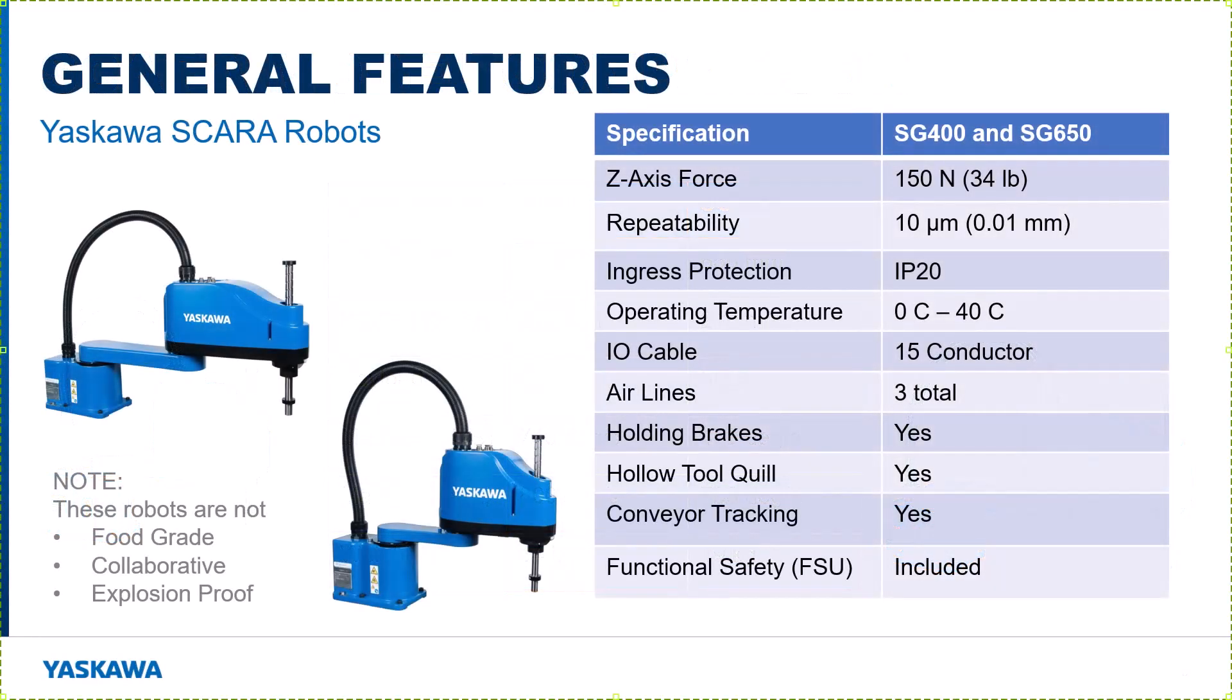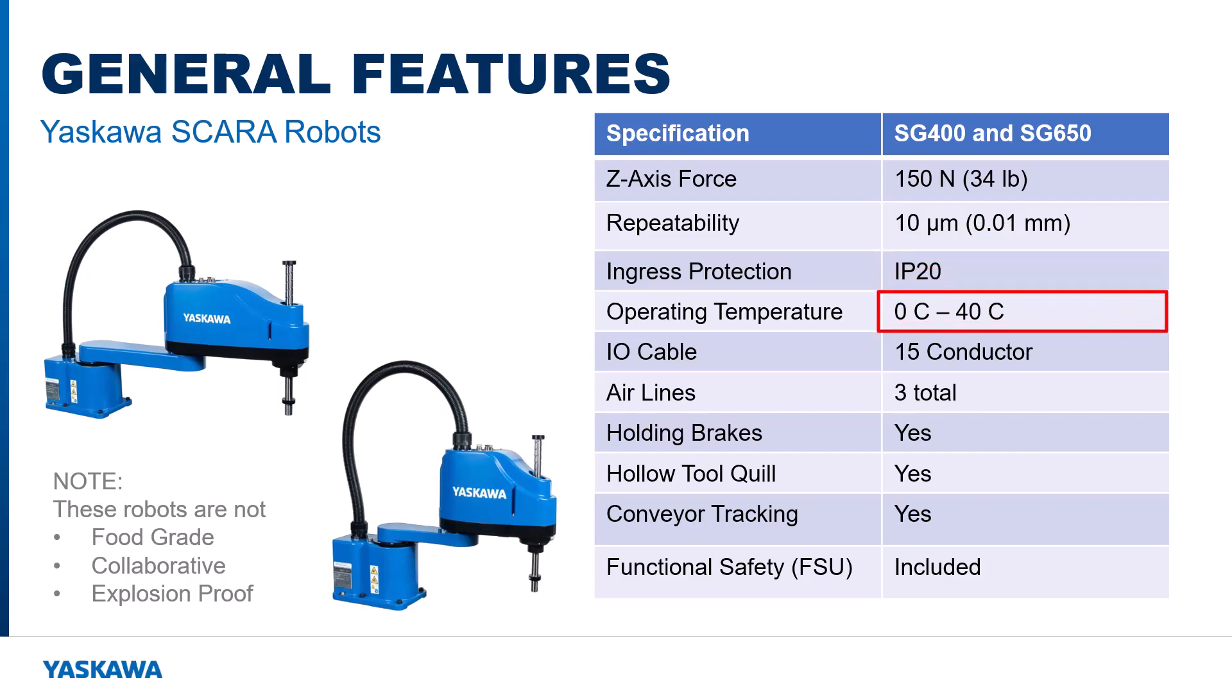These two robots have much in common. The Z-axis can produce a force of up to 150 newtons or about 34 pounds. The repeatability is rated at 10 microns, that's 1 hundredth of a millimeter. The ingress protection is IP20, with an operating temperature from 0 to 40 C. Note that the SG-series robots are not food grade, collaborative, or explosion proof.